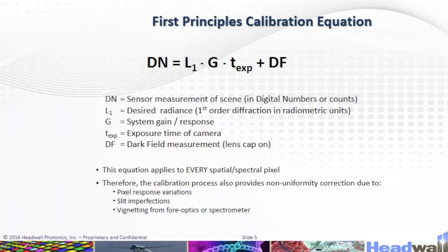Here is the first principle calibration equation: DN equals the desired radiance times system gain and response, times the exposure time of the camera, plus dark field measurements taken with the lens cap on. This equation applies to every spatial and spectral pixel. Therefore, the calibration process also provides non-uniformity correction due to pixel response variation and slit imperfections.